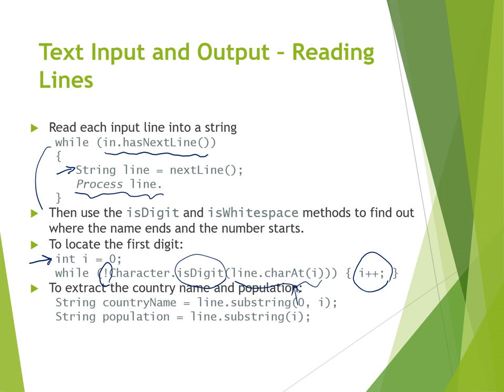At the point where `i` is the beginning of the population, we stop. Then we call the `substring()` method of the String class to get the country name by calling `line.substring(0, i)` — extracting the substring from character 0 up to character `i`. The population would be `line.substring(i)`, which extracts the population into a String. Both `countryName` and `population` now contain the appropriate values.